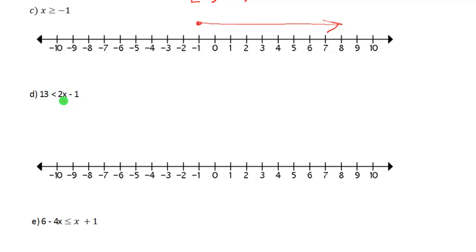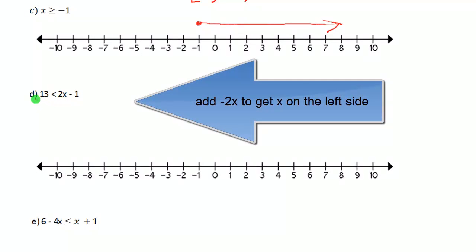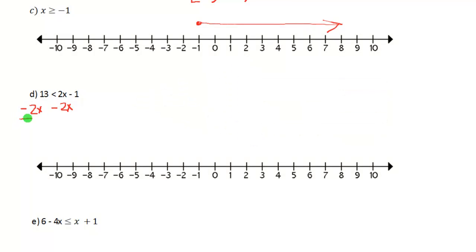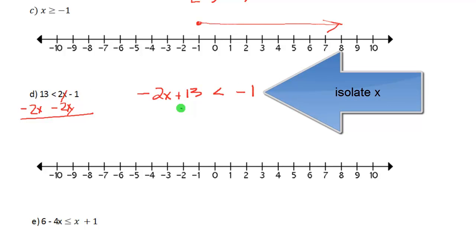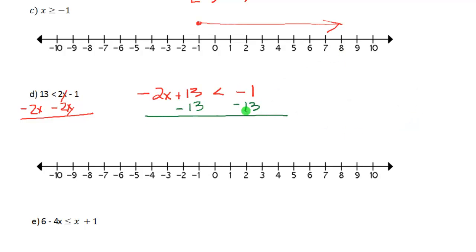Our next problem: 13 is less than 2x minus 1. Let's get x on the left-hand side, so we're going to add negative 2x to both sides, just like we did with equations. On the left I get negative 2x plus 13, which is less than negative 1 because the 2x's cancel. Now we subtract 13 from both sides to isolate x. I get negative 14, the 13's cancel, and I get negative 2x is less than negative 14.